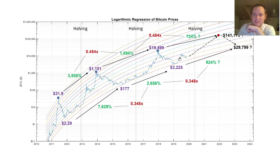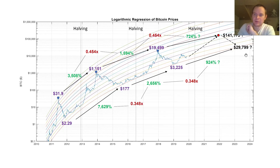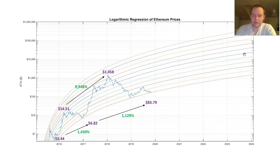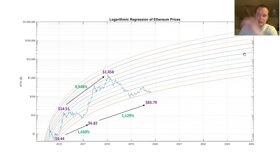We did this and then we were able to get some predictions out of it, where if past trends continue in the way they have been going, this is where Bitcoin might be headed. Now with Ethereum, the issue is that there's not nearly as much data. We have data back until 2015, but that's not a lot of data to really optimize an equation to.